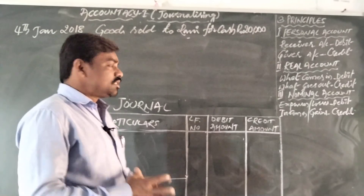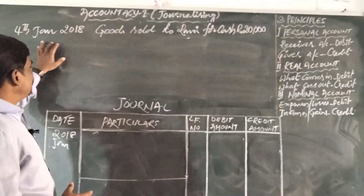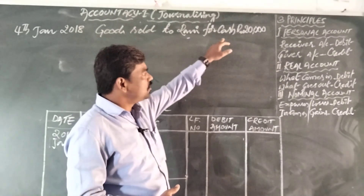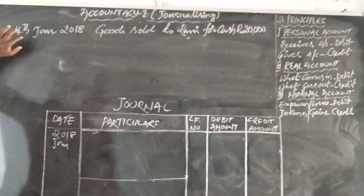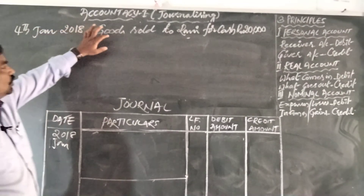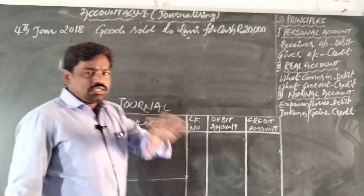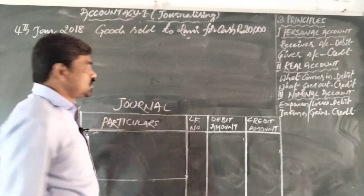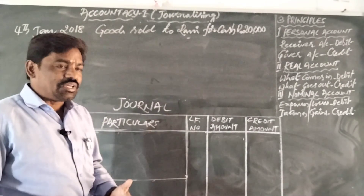Here is the transaction given: 4th January 2018 — goods sold to Rani for cash, rupees 20,000. This is one accounting transaction, and in this transaction we need to find two aspects.